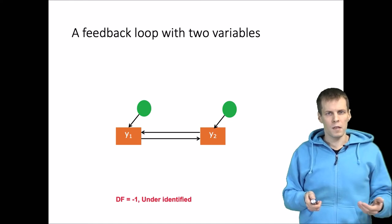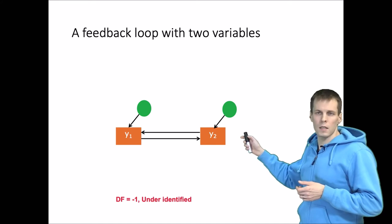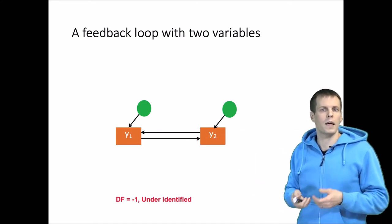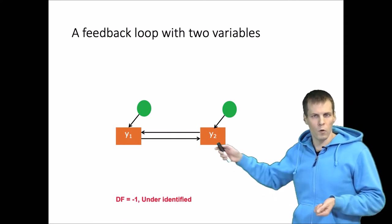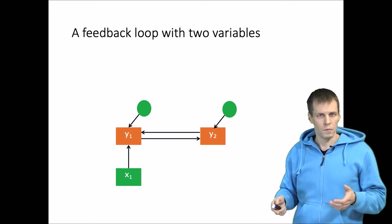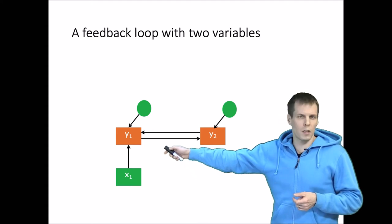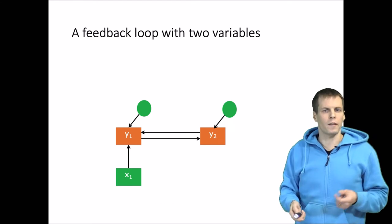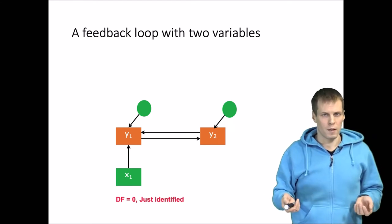If you have studied instrumental variables, then you know that in econometrics this kind of scenario is called simultaneity and it can be estimated using instrumental variables. We need an instrumental variable for y1 or y2 to identify the model. So x1 here serves as an instrument because it affects y1, does not affect y2, and is uncorrelated with the error term. That identifies the model and degrees of freedom is zero — it is just identified.